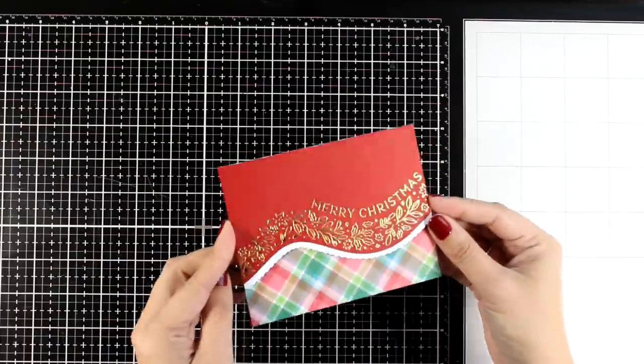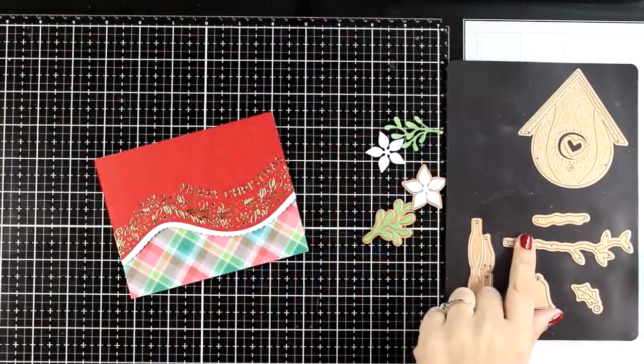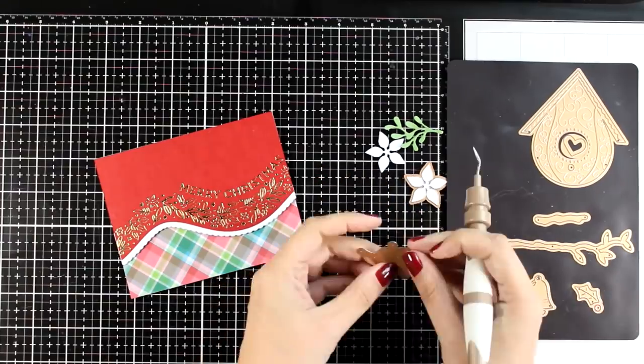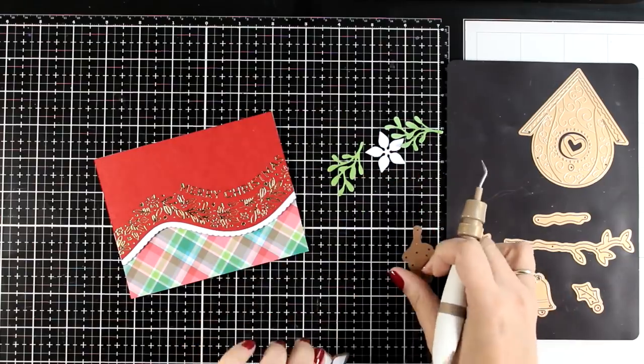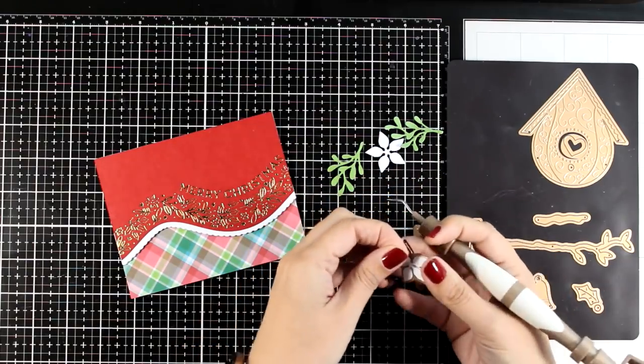And of course you can call this card done, but let's take it a step further and make it more beautiful. For that I'm bringing in my birdhouse, this is the winter one from my birdhouses collection that I designed for Spellbinders, and I'm going to use only the mistletoe branches as well as the poinsettia.